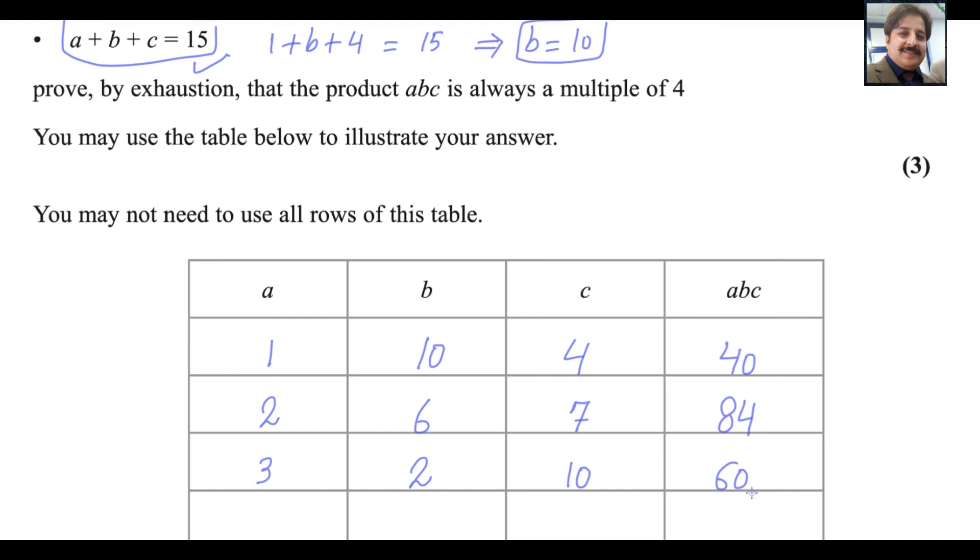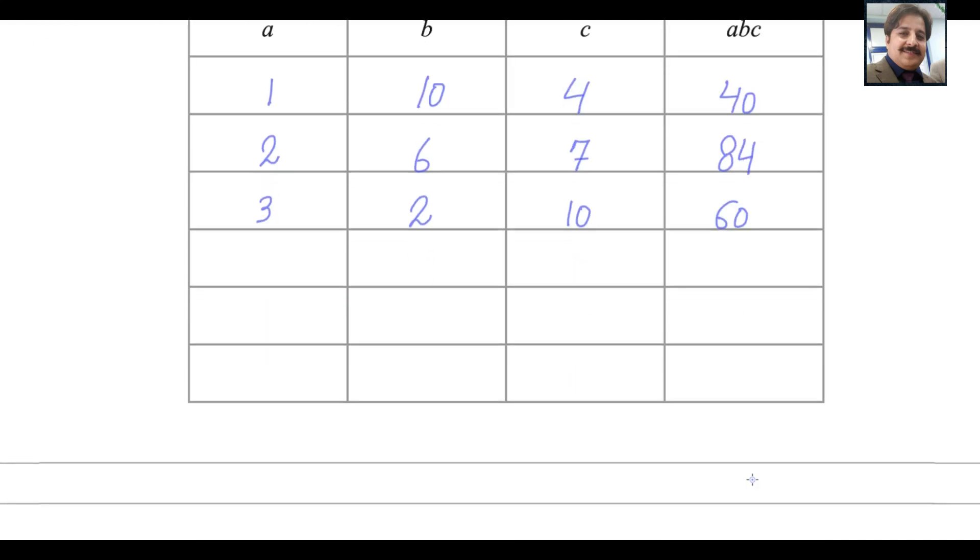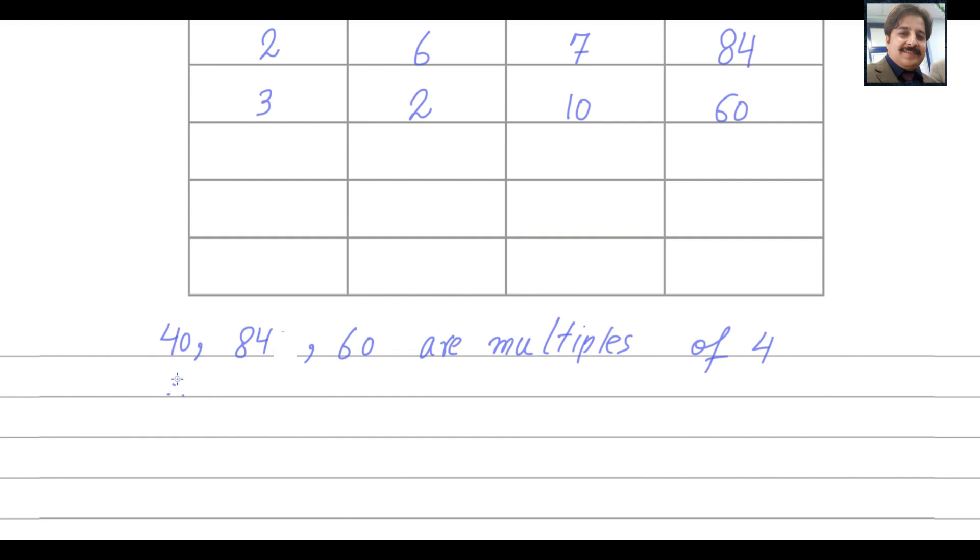It is clear from the products 40, 84, 60, all are multiples of 4. Therefore we can say 40, 84, and 60 are multiples of 4. Therefore we can write product abc is a multiple of 4.